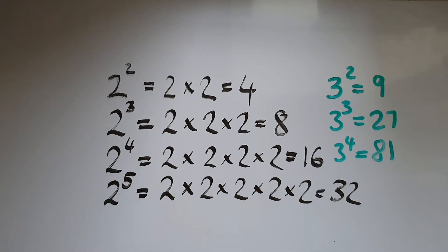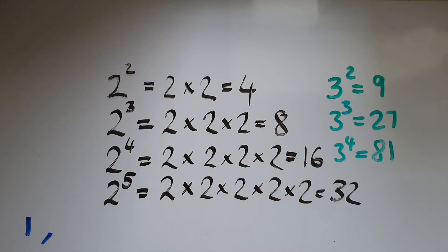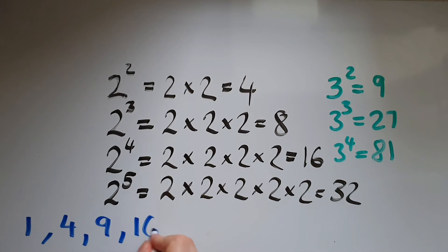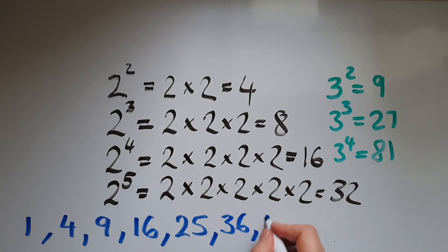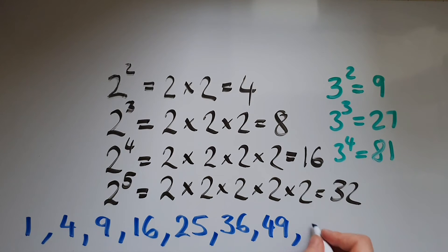1 squared is equal to 1. 2 squared gives us 4. 3 squared is 9. 4 squared is 16. 5 squared is 25. 6 squared is 36. 7 squared is 49. 8 squared is 64.